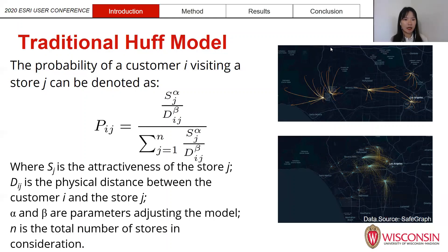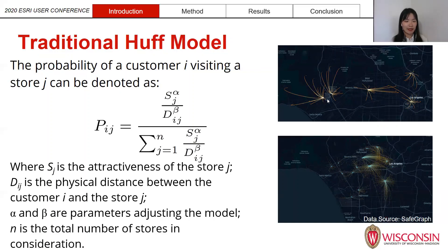On the right hand side are two images showing the visiting flow to two different types of stores. The top one shows the visiting flow from each census block group to the five Whole Foods markets in Los Angeles, and the bottom one shows visits to the Ross stores in that area. One interesting thing to notice is that the two Whole Foods markets are actually separated by a highway, and in this case even though some census block groups are closer to both of them, they will only go to the store on the same side of the highway.